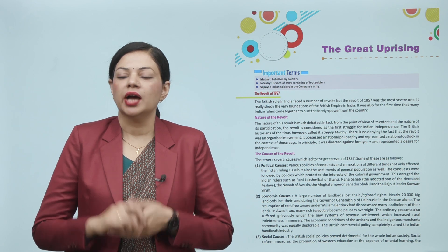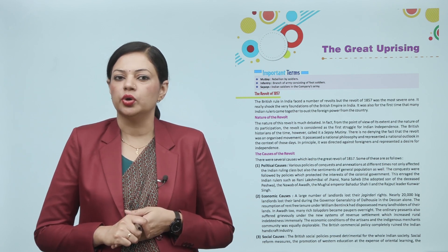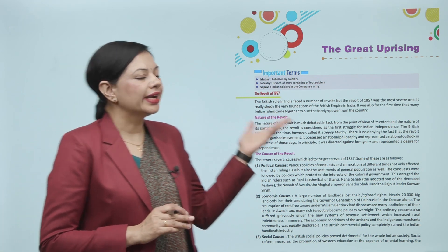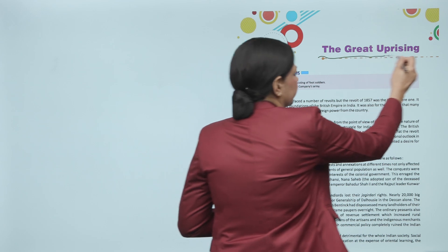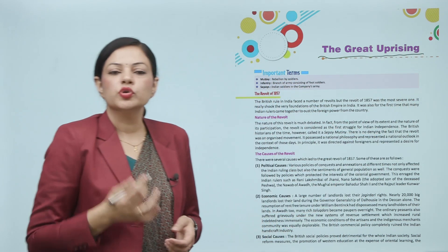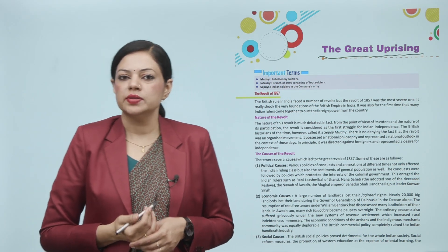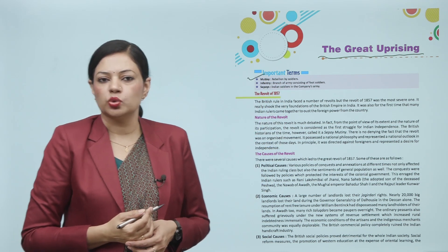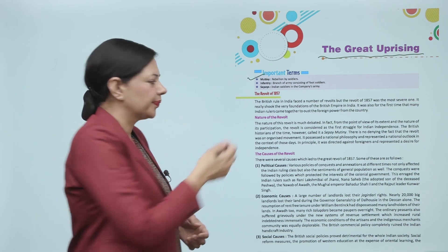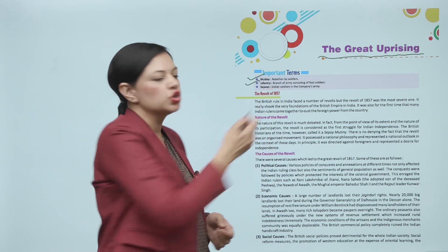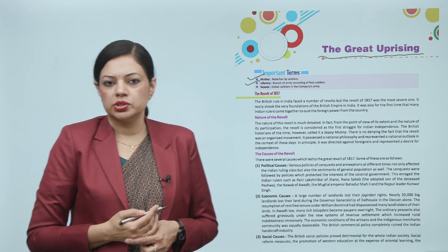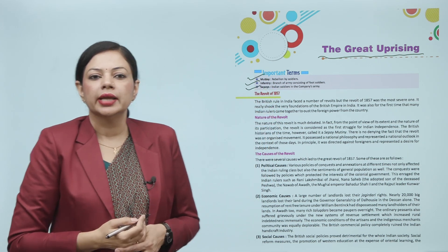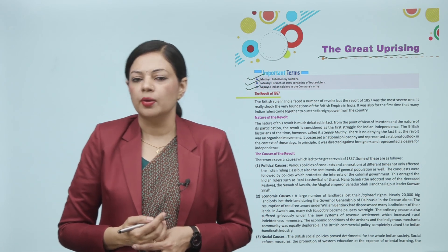Hello students, how are you? I hope you all are doing good. Today we are starting a new chapter which is named The Great Uprising. Before starting the chapter, we have to know some important terms like Mutiny, that is rebellion by soldiers; Infantry, that means branch of army consisting of foot soldiers; and Sepoys, that are Indian soldiers in the company's army.